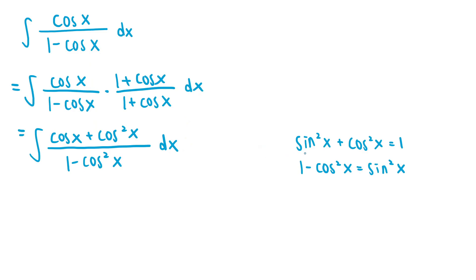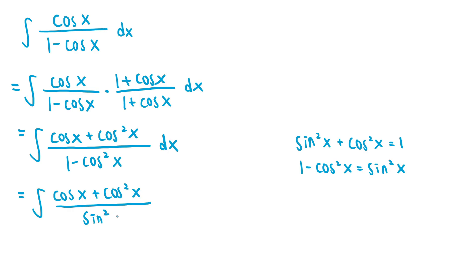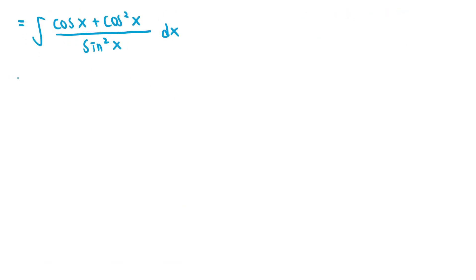If we take the trigonometric identity sine squared of x plus cosine squared of x equals 1 and subtract both sides by cosine squared of x, we get the identity 1 minus cosine squared of x equals sine squared of x. So we can rewrite the integrand as cosine of x plus cosine squared of x all over sine squared of x. We can also split the fraction and rewrite it as a sum of two smaller fractions, so the integrand becomes cosine of x over sine squared of x plus cosine squared of x over sine squared of x.